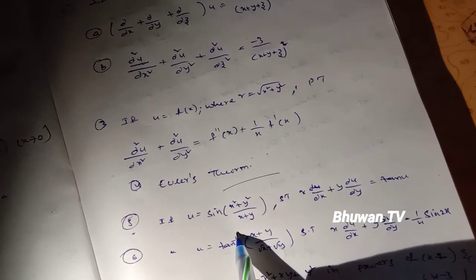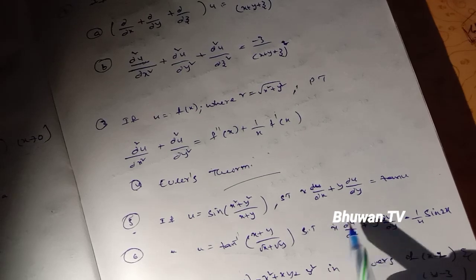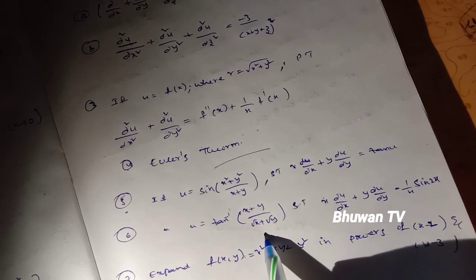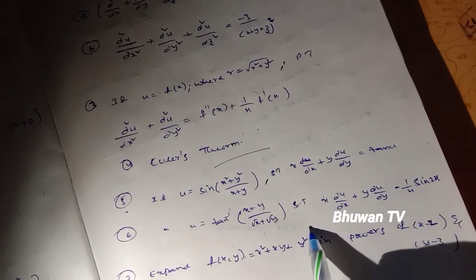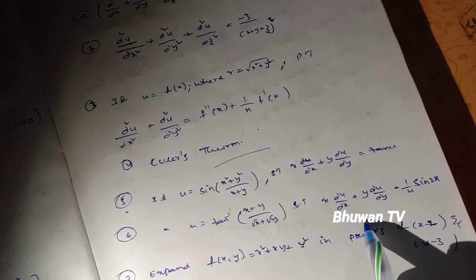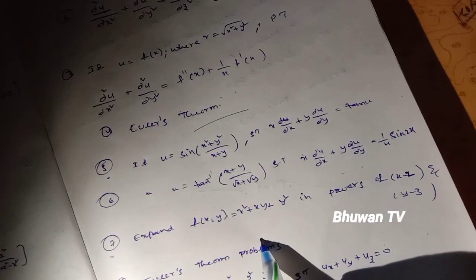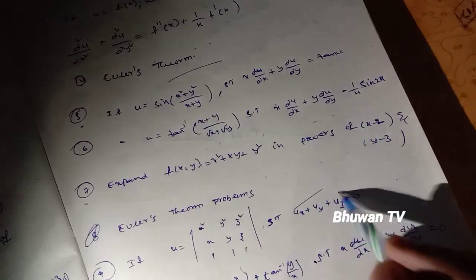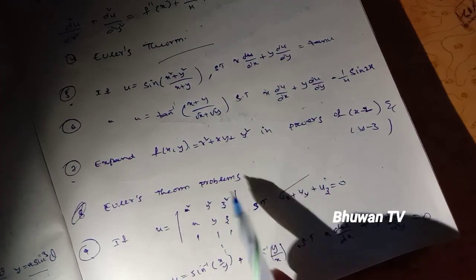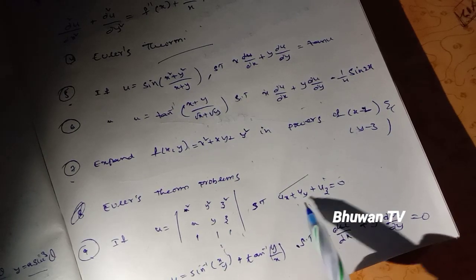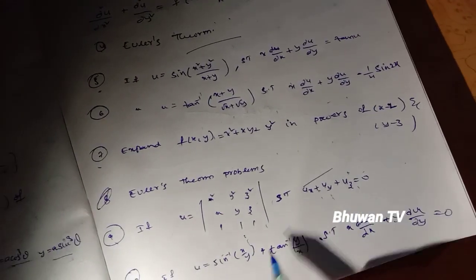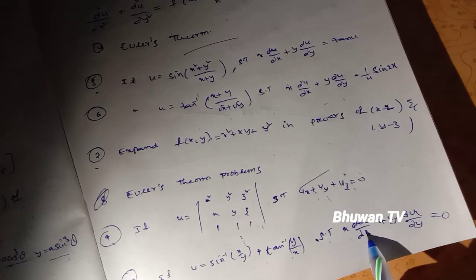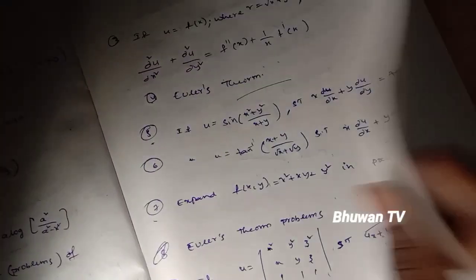Fifth: if u equals sin((x² plus y²) / (x plus y)), show that x ∂u/∂x plus y ∂u/∂y equals tan u. Next: if u equals tan⁻¹((x plus y) / (√x plus √y)), show that x ∂u/∂x plus y ∂u/∂y equals (1/2) sin 2u. Expand f(x, y) equals x² plus xy plus y² in powers of (x minus 2) and (y minus 3). If u equals sin⁻¹(x/y) plus tan⁻¹(y/x), show that x ∂u/∂x plus y ∂u/∂y equals 0.